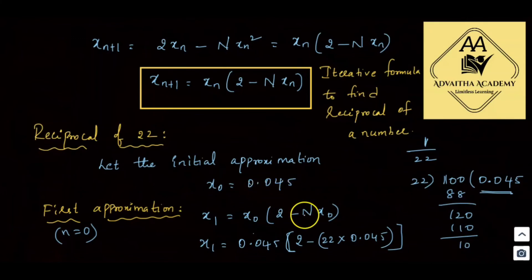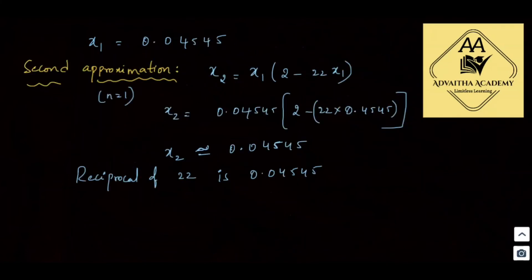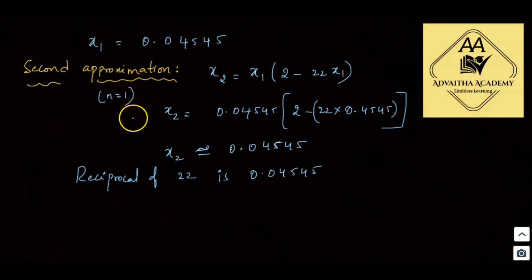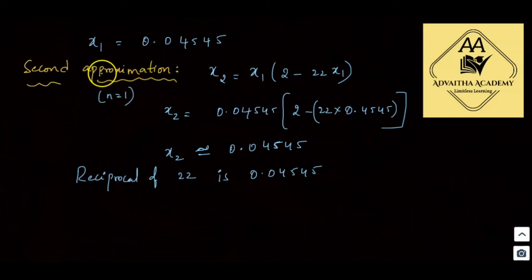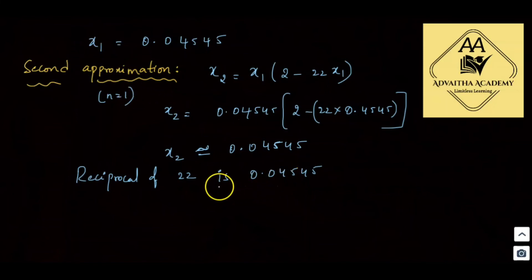From first approximation to second approximation we have almost the same value. We need a minimum of two approximations. When both approximations give the same value, that is the reciprocal of 22.